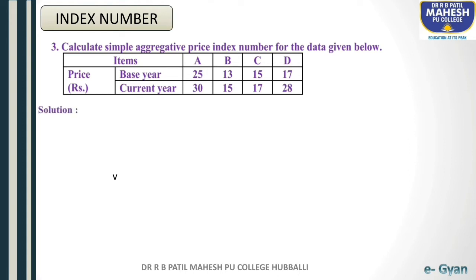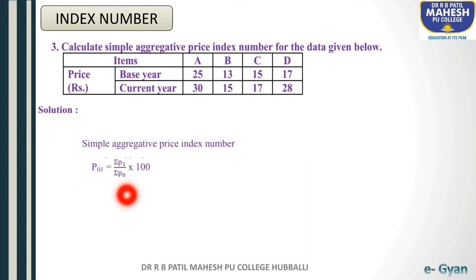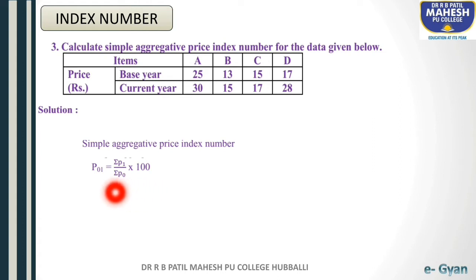Let us solve this example. The formula of simple aggregative price index number is: P01 equals summation P1 divided by summation P0, into 100. This means total of current year price divided by total of base year price, multiplied by 100.